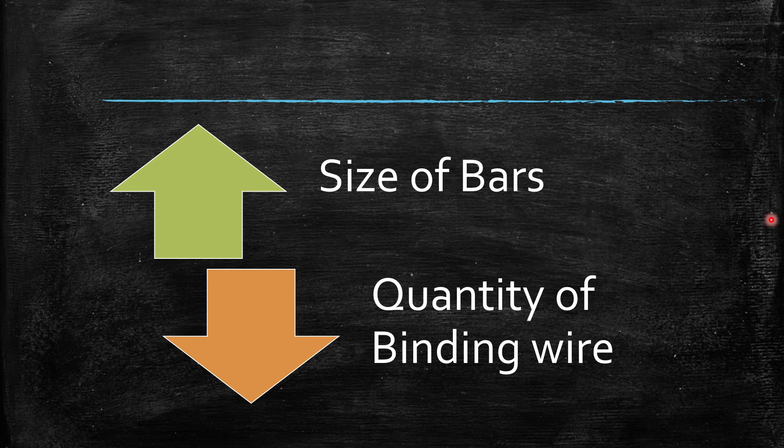As the size of bar increases, the quantity of binding wire decreases, which means for 8 mm bar, you'll be needing more quantity of binding wire than the 32 mm bar.